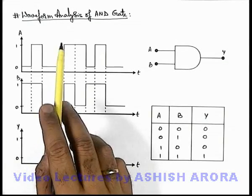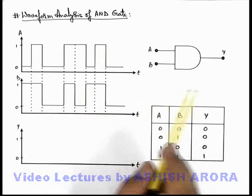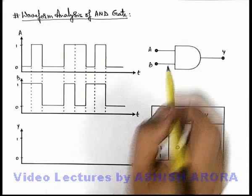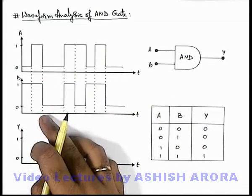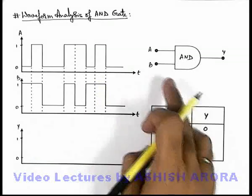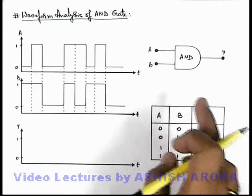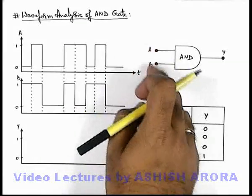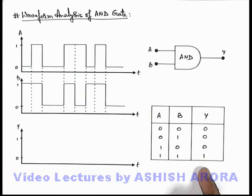Let us now discuss the waveform analysis of AND gates, i.e., the analysis of the waveform produced at the output terminal of an AND gate if at the input terminal two digital signals are applied. Obviously, in the case of digital signals at the input, the output signal will be high or low — it depends on the instantaneous values of voltages at A and B, whether these are high or low, according to this truth table.